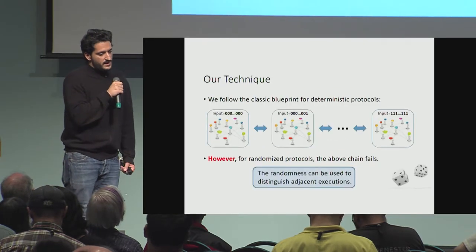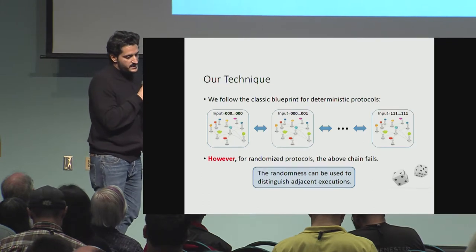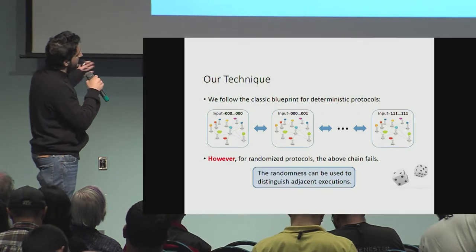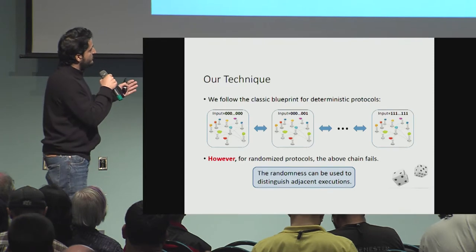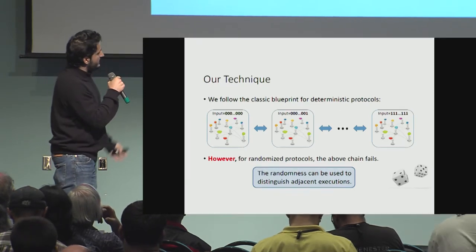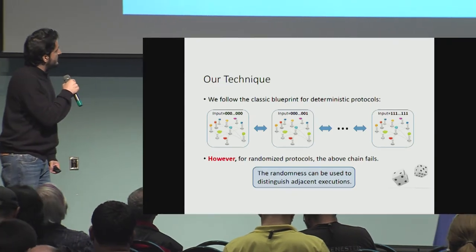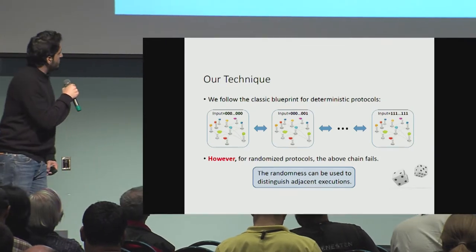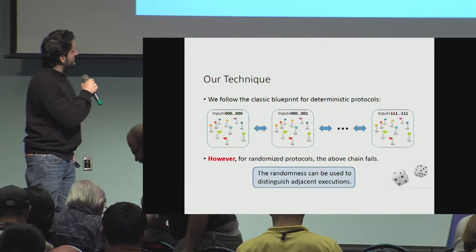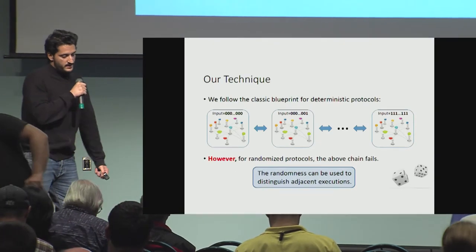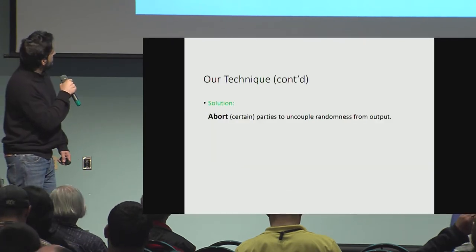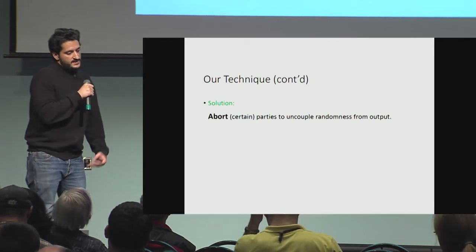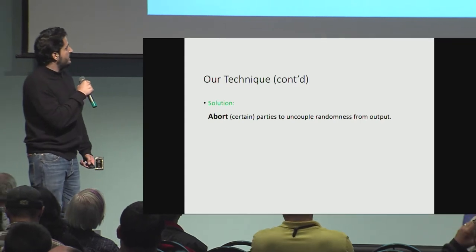To show this result, we followed the classic blueprint for deterministic termination, meaning we considered a sequence of executions such that the input configuration at the ends of these executions gives different output bits, and we show there is an attack for adjacent executions such that these executions are indistinguishable for the honest parties. However, for randomized protocols this argument fails because the randomness can be used to distinguish between adjacent executions. To remedy this, we propose aborting some parties in order to decouple the randomness from the output.